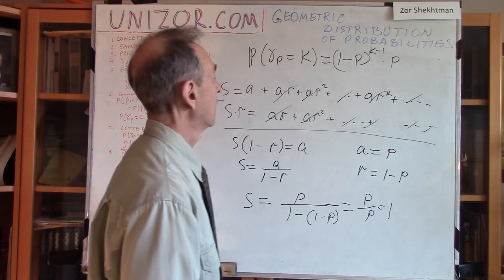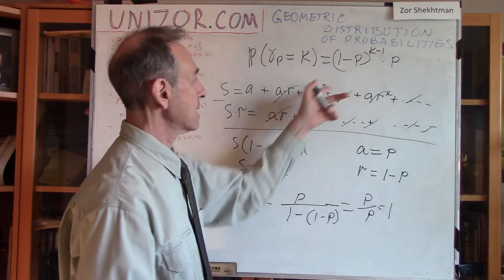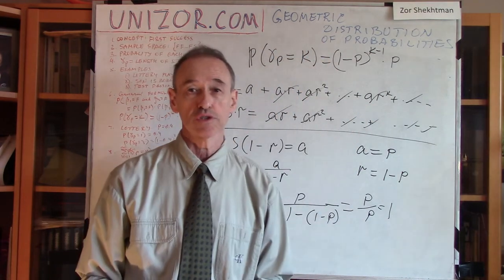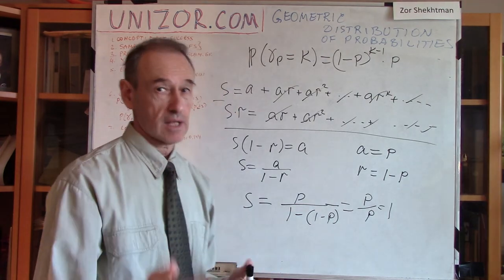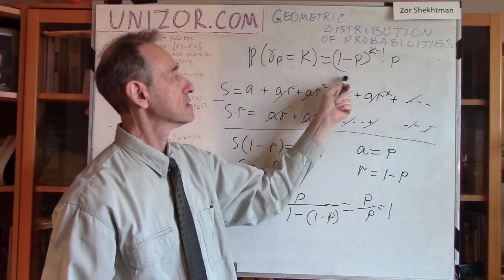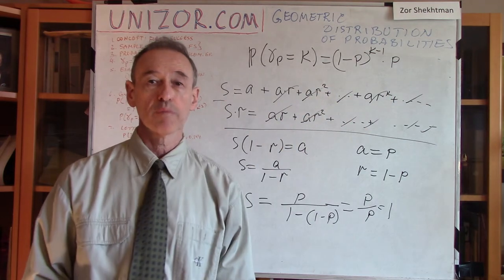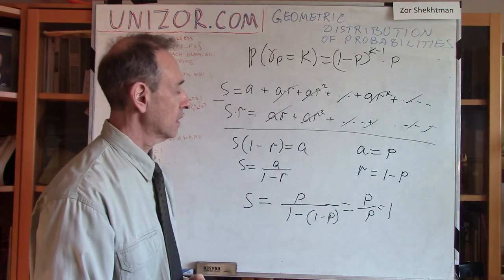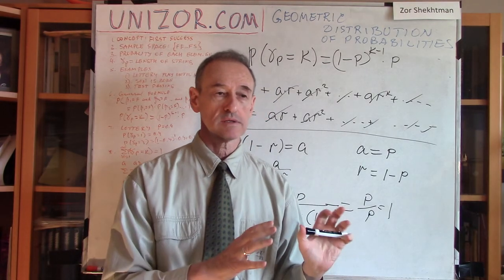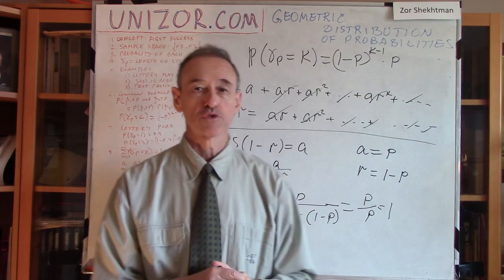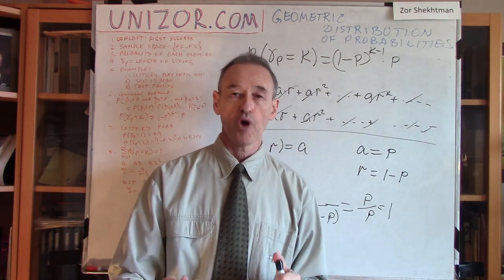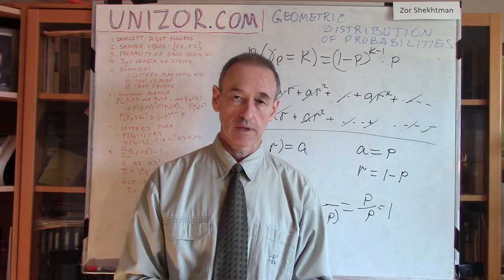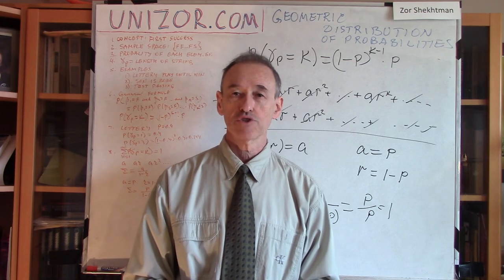The name 'geometric distribution of probabilities' comes directly from the fact that these probabilities represent a geometric progression. That's the definition of this particular distribution. Certain properties — like the expectation, mean value, and variance — we will discuss in the next lecture. Thank you very much, and good luck!